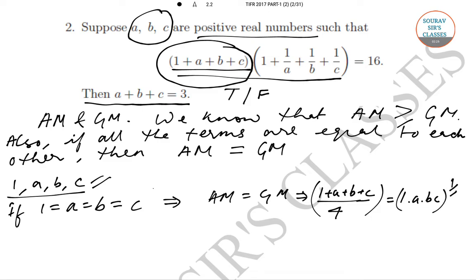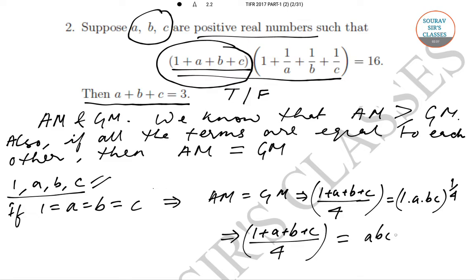This gives us (1 + a + b + c) / 4 = (abc)^(1/4), and this equals 1. We take this as equation 1.